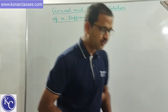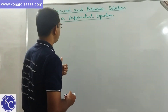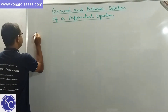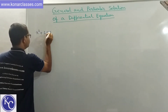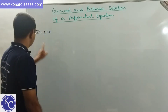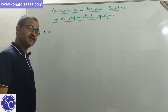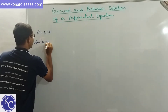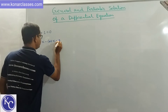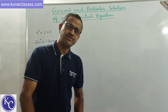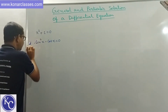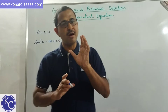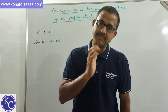Before we proceed, I would like to give you some examples of equations apart from differential equations. For example, x squared plus 1 equal to 0 — this is a quadratic equation, and the root in this case is a complex number. Another example: sin squared x minus cos x equal to 0 — this is a trigonometric equation and the root is a real number. So in algebraic and trigonometric equations, the solutions are numbers, be it real or complex.